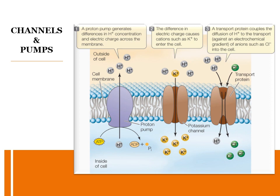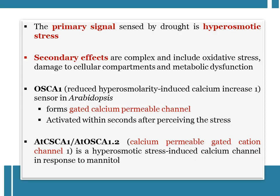The primary stimulus sensed during drought is hyperosmotic stress — that is, a reduction in water potential outside the cell compared to the inside. This also leads to various secondary effects, which are more complicated and include generation of oxidative stress, damage to cellular compartments, and several metabolic dysfunctions. These dysfunctions arise because when water inside the cell is lost to the outside, the structure and conformation of macromolecules including proteins — the major enzymes — changes, thereby altering metabolic processes.